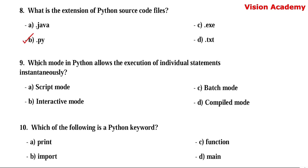Question number 9. Which mode in Python allows the execution of individual statements instantaneously? Option A: script mode. Option B: interactive mode. Option C: batch mode. Option D: compiled mode. Here, option B — interactive mode — is the right answer.